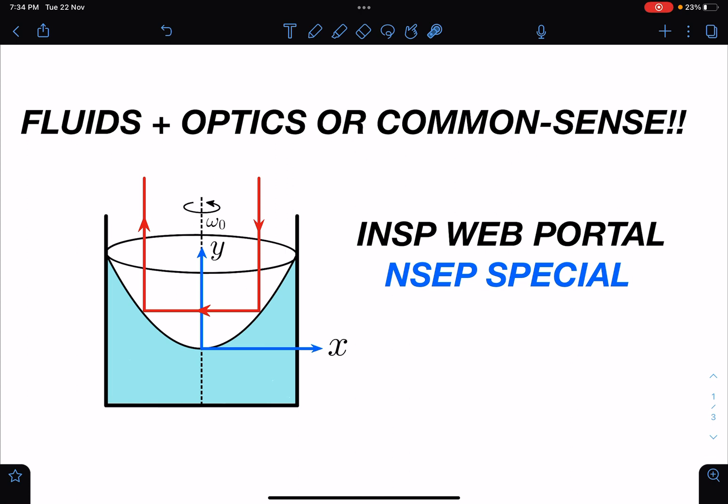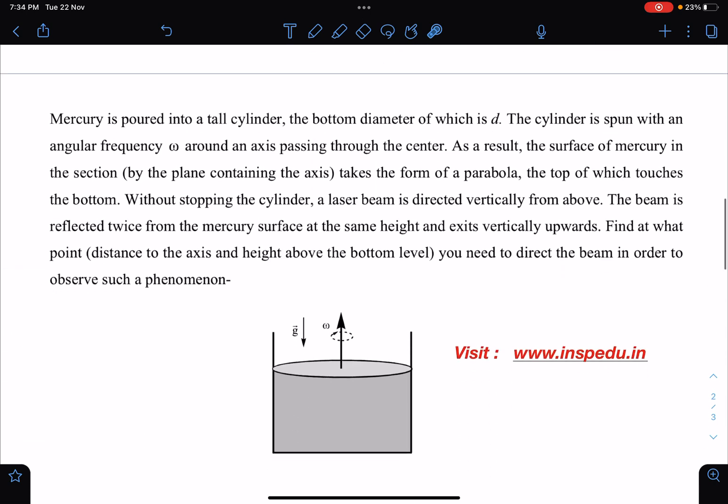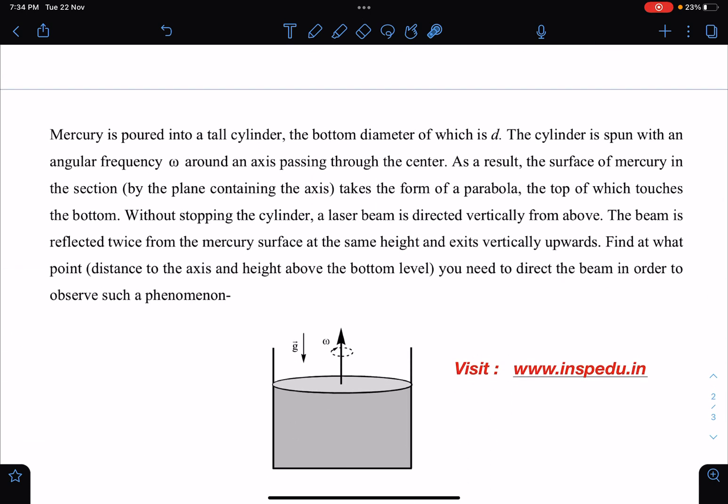So here is the problem statement. Basically, what is given here is mercury is present in this vessel and we are rotating it with angular velocity omega, due to which it is taking a shape like this. It is given that it is coming till here. As a result, the surface of mercury takes the form of a parabola, basically a paraboloid.